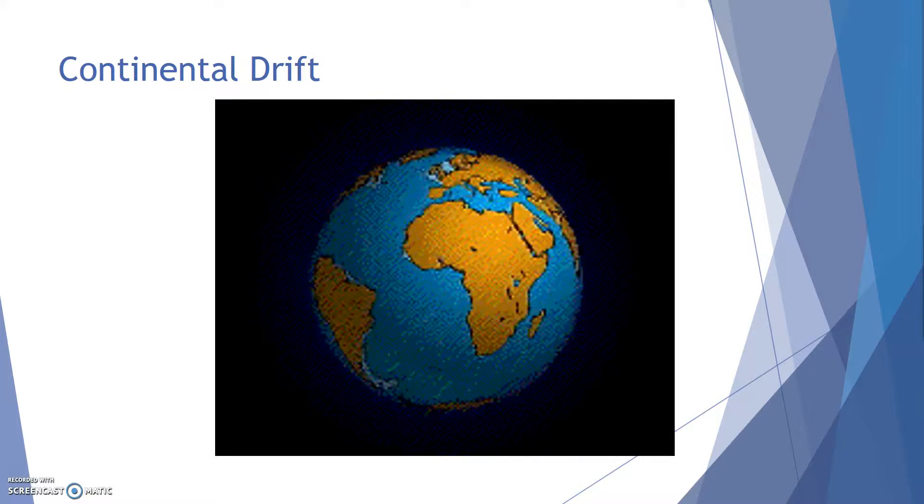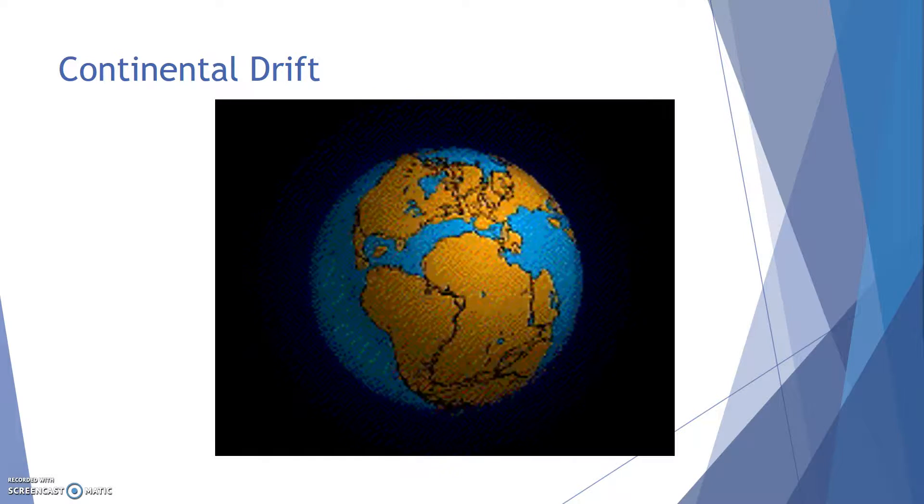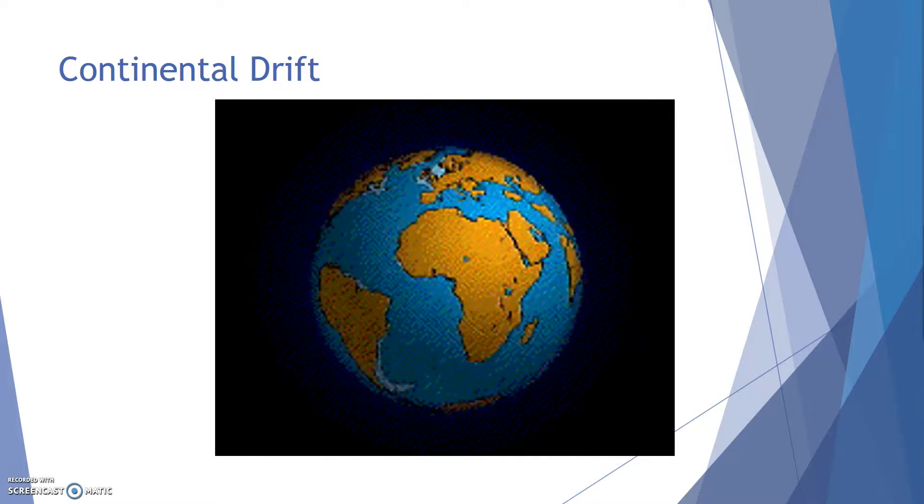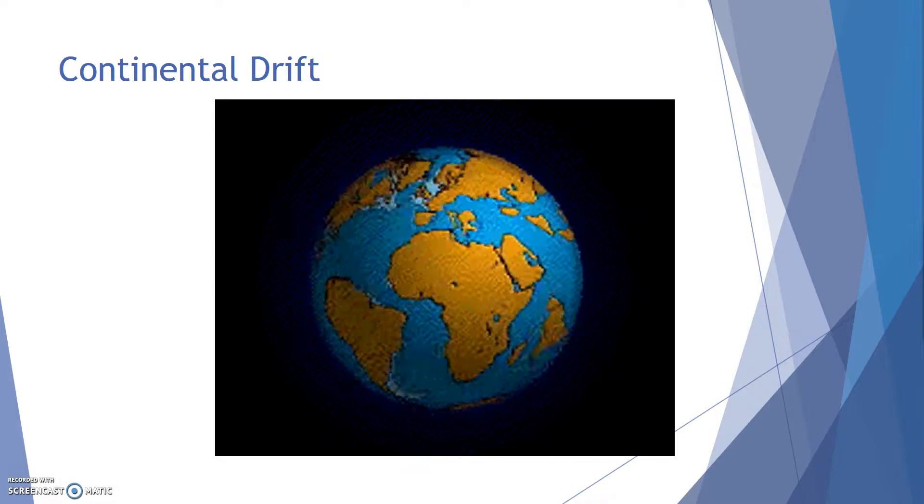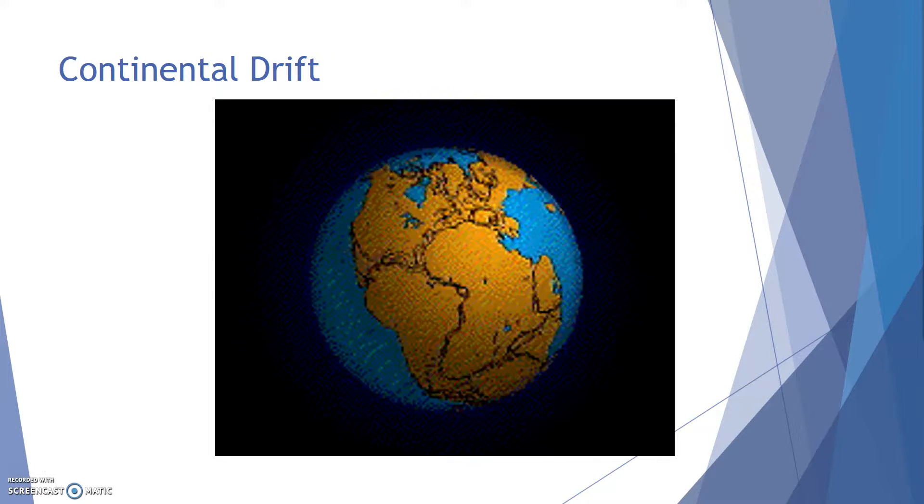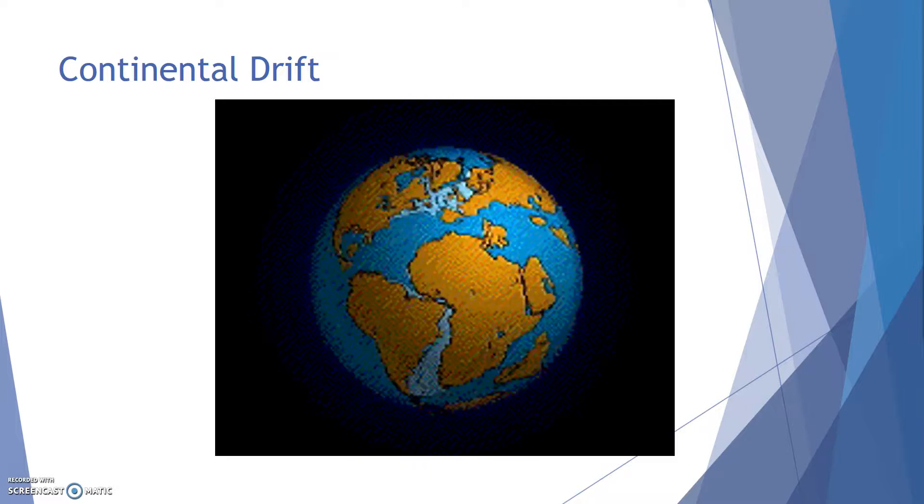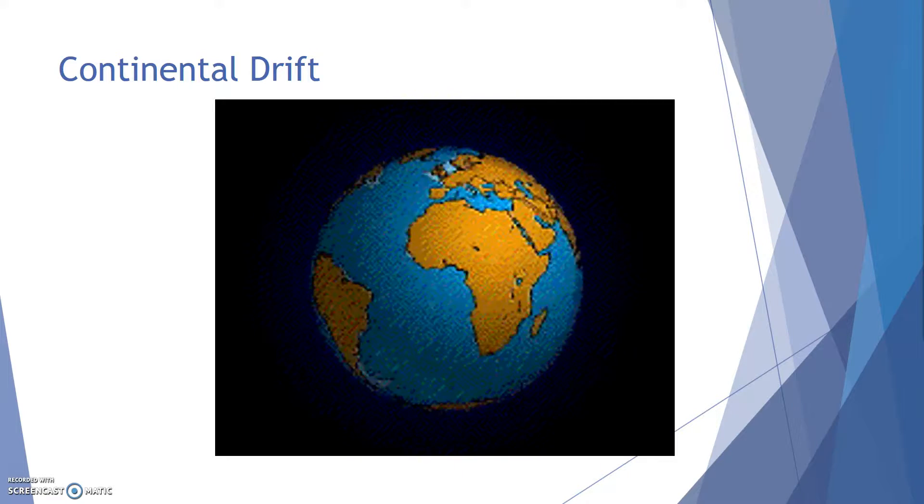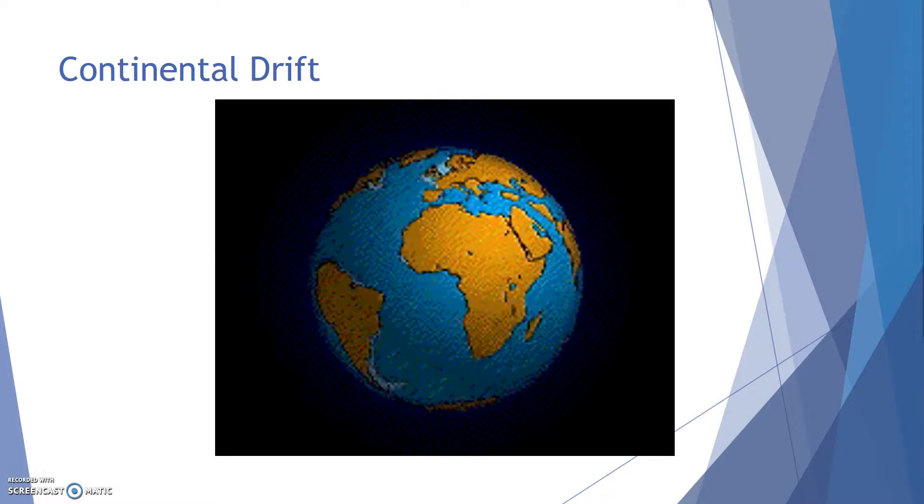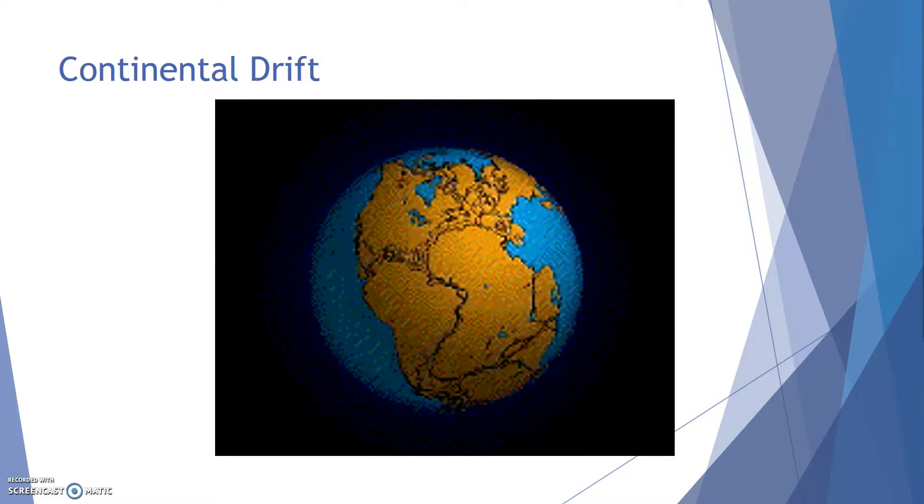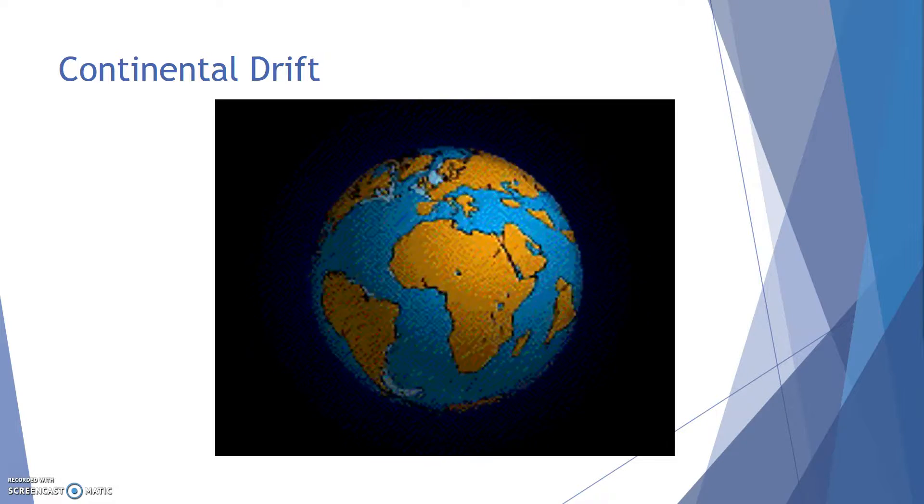To start off, take a look at this animation on the screen here. And what this is showing is the breakup of what has been called the supercontinent of Pangaea. This is what we believe all of the landmass on Earth looked like about 225 million years ago during the Permian era.